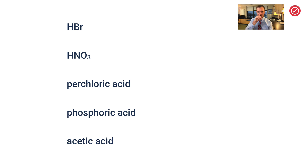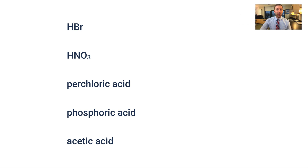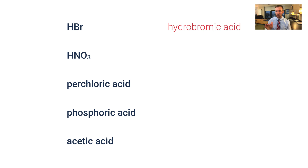Try some of these on your own — pause the video, then we'll go through them together since we want to work in both directions. HBr does not contain oxygen, so following the leftmost part of the flowchart, this is simply hydrobromic acid. HNO3 obviously does contain oxygen, and the NO3 piece is nitrate — so the ending is -ate. Snaking through the flowchart, we would call this nitric acid. The root of nitrate is N-I-T-R, and that's what you plug in as the anion root.